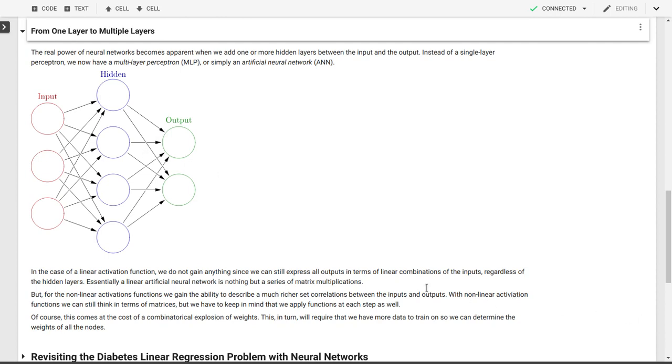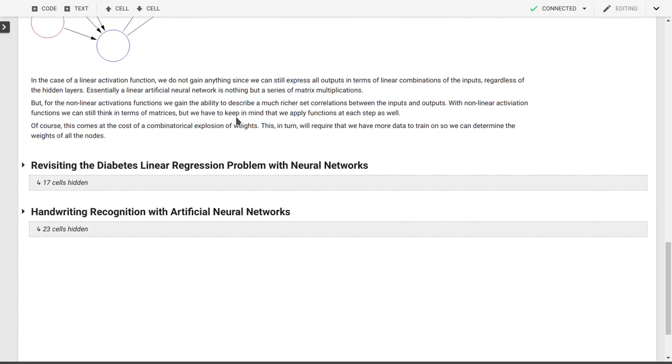With those nonlinear activation functions, we can still think in terms of matrices of the weights, but we can't just propagate everything through. We have to keep in mind that there's this nonlinear activation function. It does, however, allow to have a much richer set of connections between the input and the output because you're not just restricted to linear functions or linear dependencies of the output target variables on the input feature variables. What we'll do next is we'll apply this to our linear regression problem in the diabetes dataset, and then we'll move on to handwriting recognition with artificial neural networks based on essentially pixels in the input image. You'll see that this is in particular where these neural networks can have great applications.